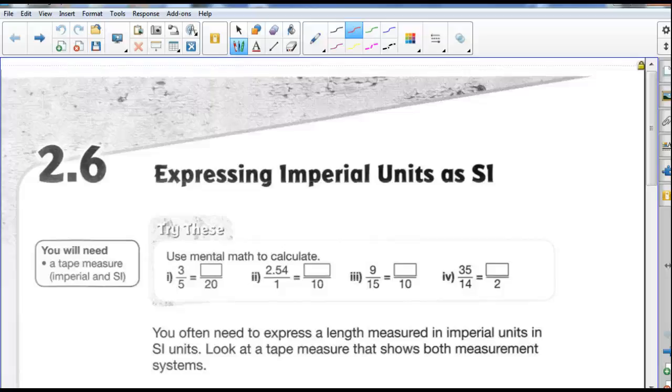Okay, this is 2.6, expressing imperial units as SI. Basically what we're going to be doing is we're going to be converting between units from imperial into the metric system. So you're going to need a tape measure or ruler that measures both imperial and SI to do this.